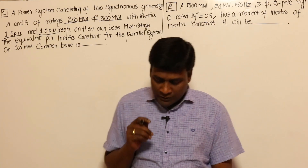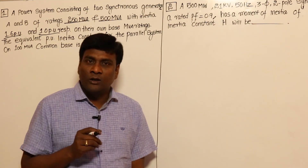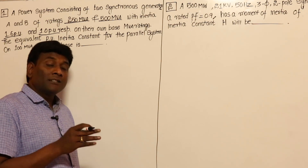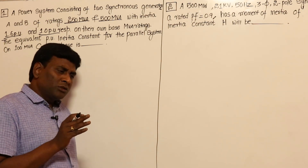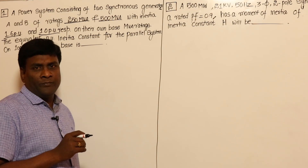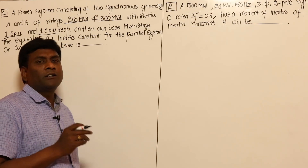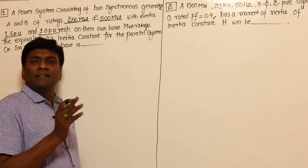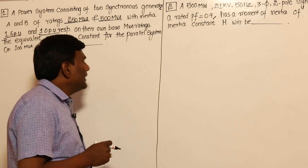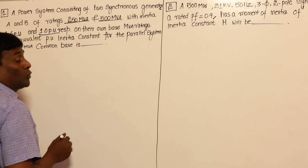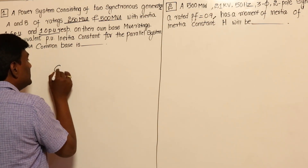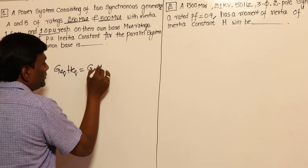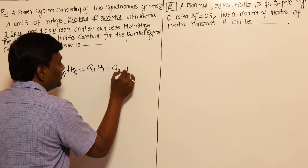There are two cases: coherent systems and non-coherent systems — swinging together or not swinging together. In GATE, they have not given non-coherent systems so far, so let us consider the coherent case only. In the coherent case, G_equivalent × H_equivalent = G1×H1 + G2×H2.